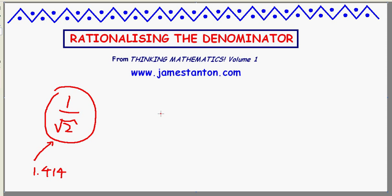So if I actually needed to work this out as a decimal, I'd have to do this by hand. I'd have to go 1.000000 forever, divided by 1.414. And off I go on a horrendous long division problem. It would take me a while.